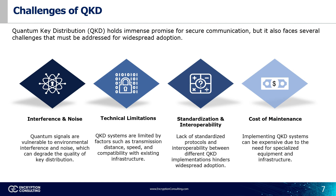The lack of standardized protocols and interoperability between different QKD systems creates a barrier to adoption. Currently, different vendors may have incompatible implementations, hindering seamless integration and network-wide deployment. This lack of standardization makes it difficult to choose, implement, and manage QKD systems from various vendors within a single network. To solve this, establishing an industry-wide standard and protocol is crucial for ensuring interoperability and promoting widespread adoption. Organizations like the International Telecommunications Union are actively working on standardization efforts.